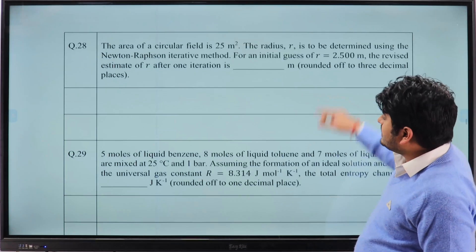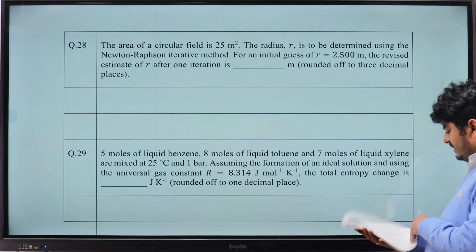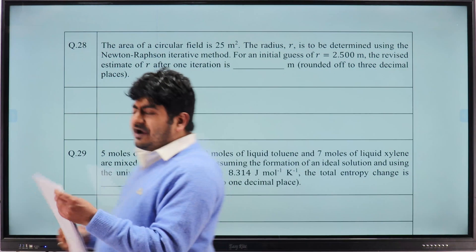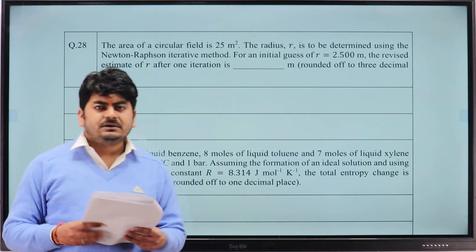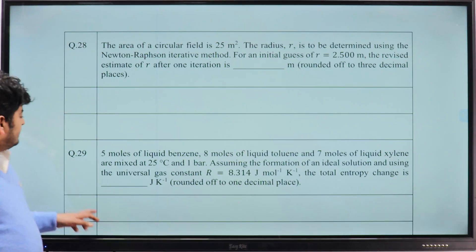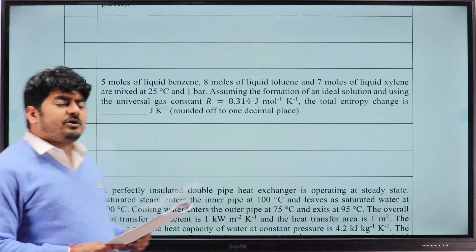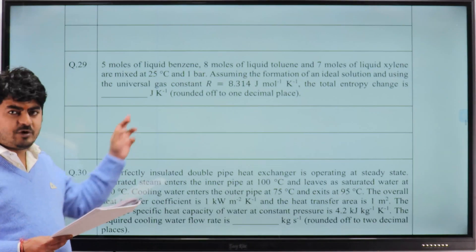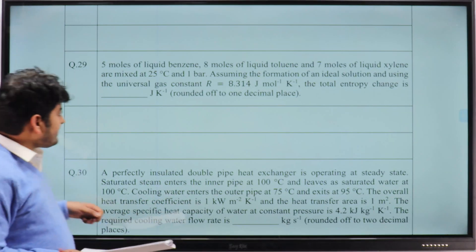Now question number 28, the area of a circular field from Newton-Raphson method, the answer is 2.841 up to three decimal places. For this question from solution thermodynamics, entropy change of mixing, correct answer is 179.7.